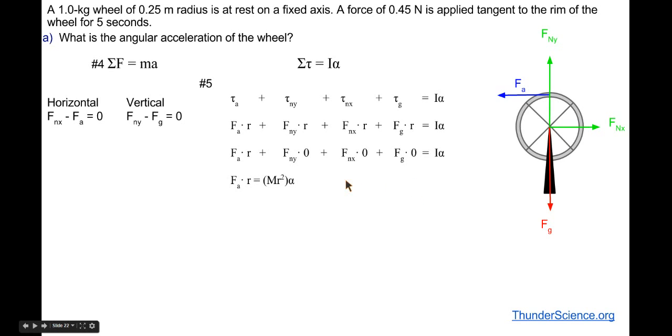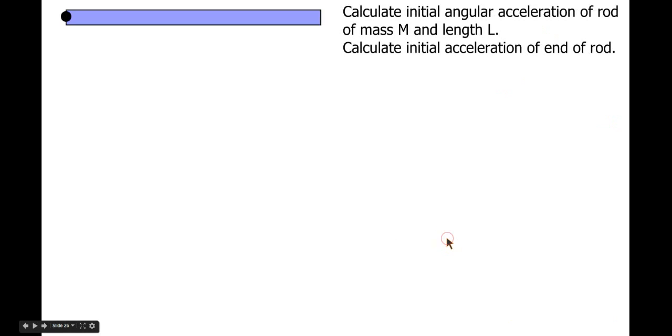And so what happens there is that means I just get this part of it equaling I alpha, but the rotational inertia I of a wheel is mr squared. I multiply that times alpha. I can do some algebraic things here where I cancel out an R from the left and an R from the right. Then I solve this for alpha by dividing both sides by mr, and then do the math, and I find that the angular acceleration is 1.8 radians per second squared.